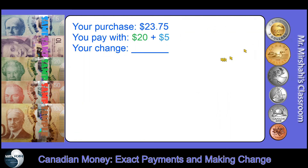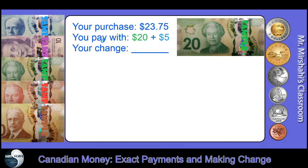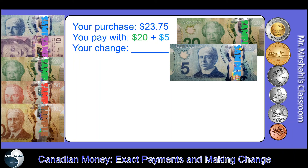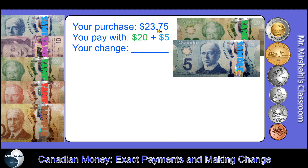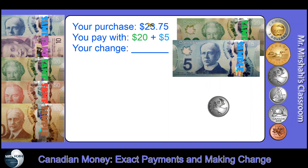Last example: your purchase amount is $23.75. You paid with a $20 and a $5 — that's $25. You paid too much, so the cashier must give you change back. From $23.75 — it's already at 75 cents, so all I have to do is add a quarter to get to the next dollar: $24. Then from $24 to $25, all I need to add is a loonie.